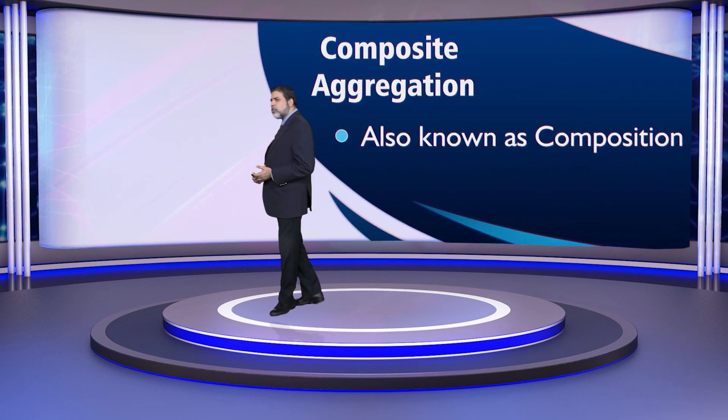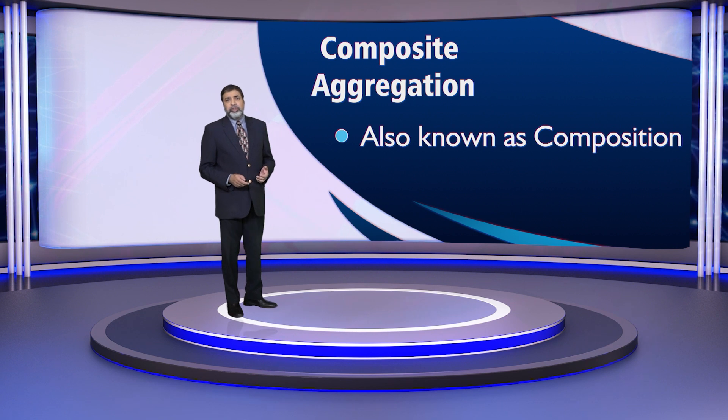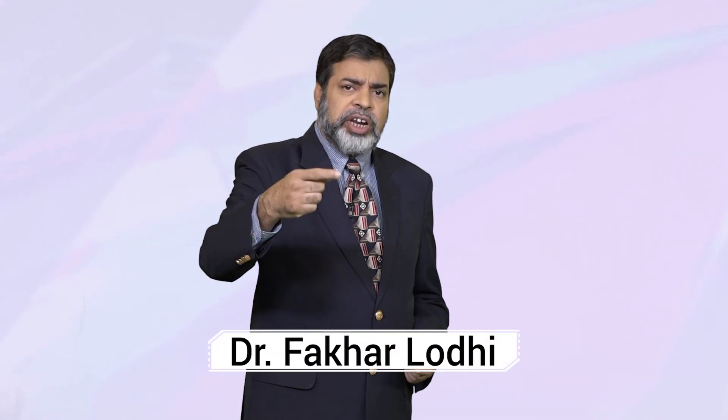Modeling placebo — what is placebo? Even the UML reference manual notes this. Lekin aggregation ki ek aur subclass hai jis ko hum composite aggregation kehte hain, aur taur pe isko composition bhi kaha jaata hai. So association hai, association ki ek type hai jis ko aggregation kehte hain, aur aggregation ki ek further subclass hai jis ko composition kehte hain ya composite aggregation — this has been recognized as quite useful aur bohot common istamal hai.